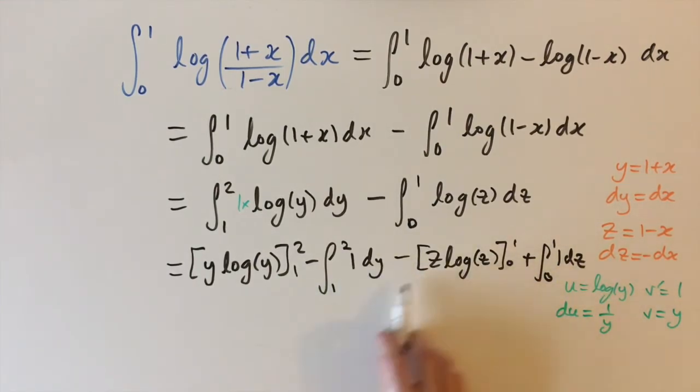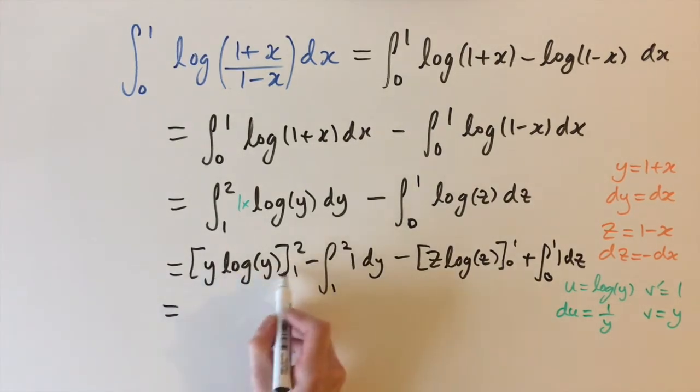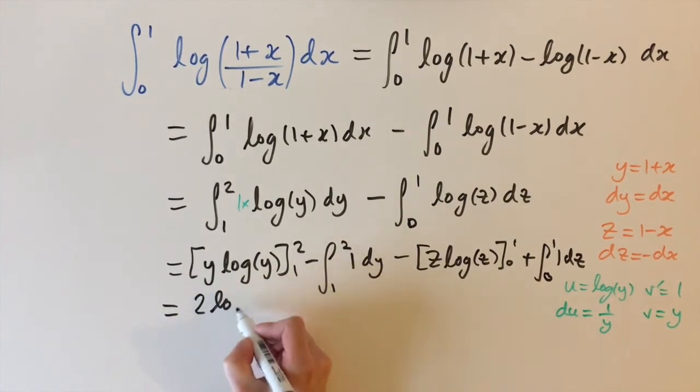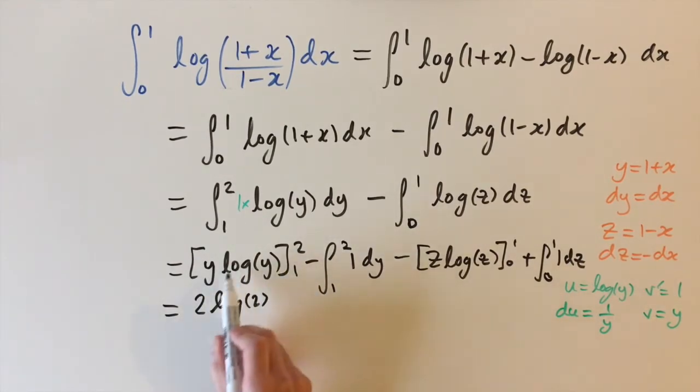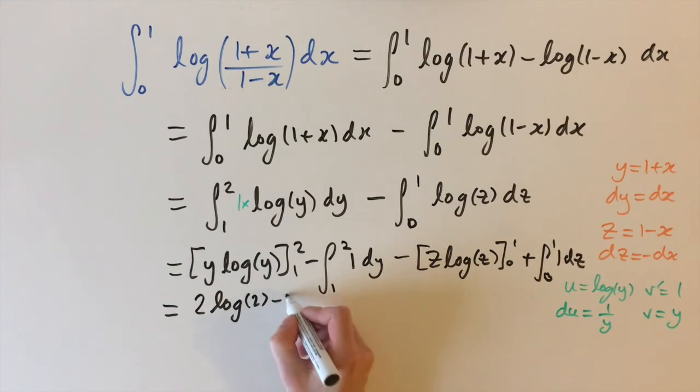So now we can integrate this and we can evaluate this and this will lead us to the answer. So just putting the numbers in we have 2 times log 2, 2 times log 2 minus 1 times log of 1. And log of 1 is always 0 so this is just 0.